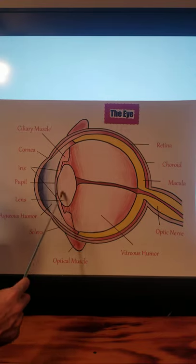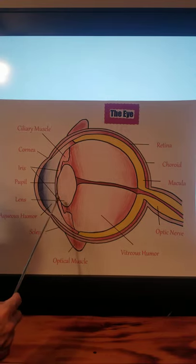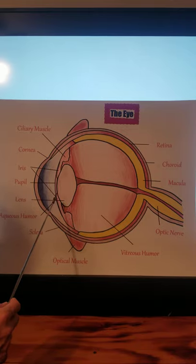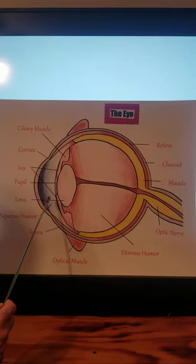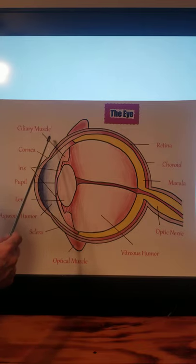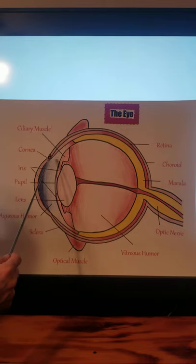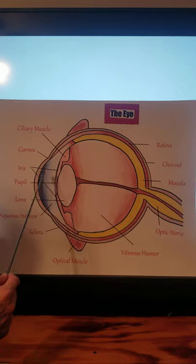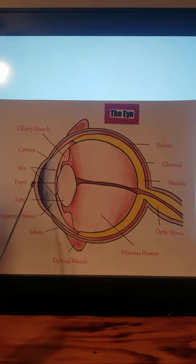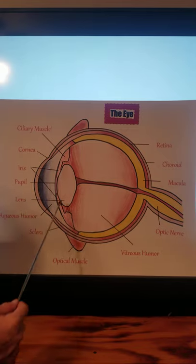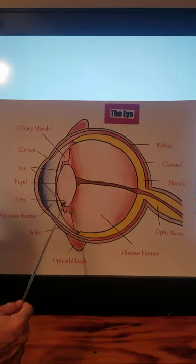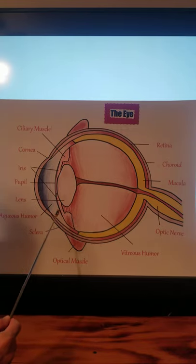We have the lens. The primary function of the lens is to bend light rays, allowing the rays to fall onto the retina. The ciliary muscle is involved in lens accommodation — it controls the movement and accommodation of the lens, the intraocular pressure, and the shape of the lens.